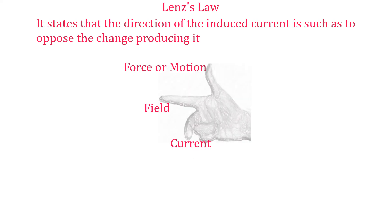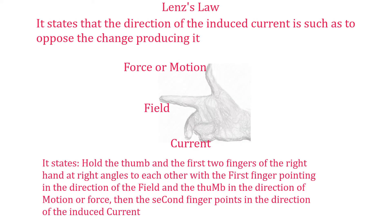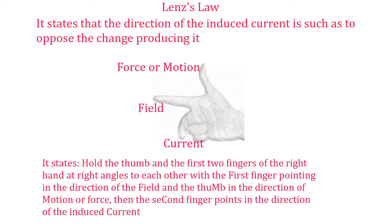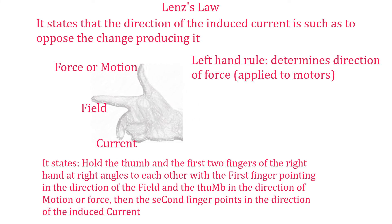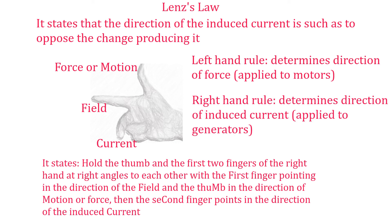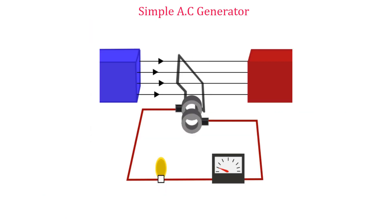For a straight conductor or wire moving at right angles to a magnetic field, Fleming's right-hand rule can be used to determine the direction of the induced current. It states: hold the thumb and first two fingers of the right hand at right angles to each other, with the first finger pointing in the direction of the field and the thumb in the direction of motion of the wire; then the second finger points in the direction of the induced current. To summarize: Fleming's left-hand rule determines the direction of force, while Fleming's right-hand rule determines the direction of induced current and is applied to generators.